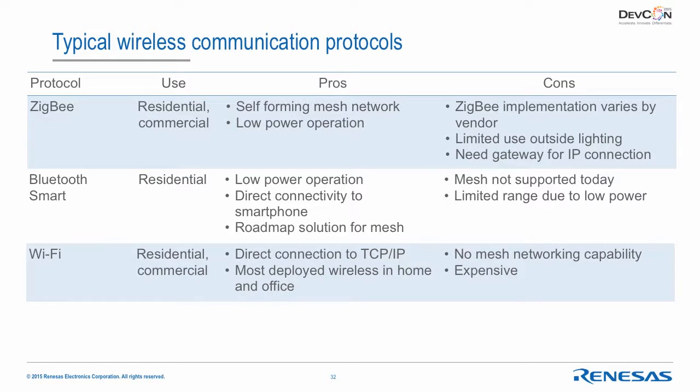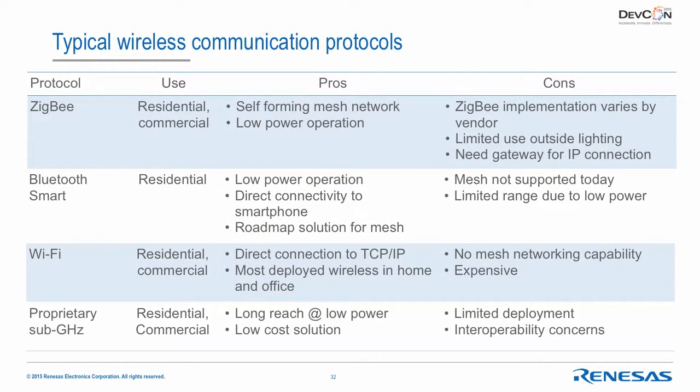Wi-Fi is the most commonly installed wireless in offices and commercial buildings — no gateway box needed, it's a direct connection. The challenge is cost: putting Wi-Fi in a bulb gets expensive quickly. Sub-gigahertz solutions from various vendors offer low cost, low power, and long reach, but the challenge is vendor lock-in — you have no interoperability and must source your entire BOM from the same vendor for sensors, controllers, and networking.